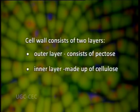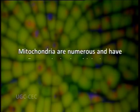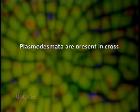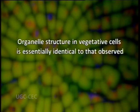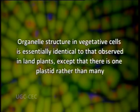The cell wall consists of two layers: the outer layer is made up of pectins and the inner one is made up of cellulose microfibrils. The cells are uninucleate, and in each cell there is a laminate parietal girdle-like chloroplast which wholly or partially encircles the protoplast, with one or two pyrenoids. Mitochondria are numerous and have flattened mitochondrial cristae. Plasmodesmata are present in the cross walls between cells of the same filaments. In general, the organelle structure in vegetative cells is essentially identical to that observed in plants.